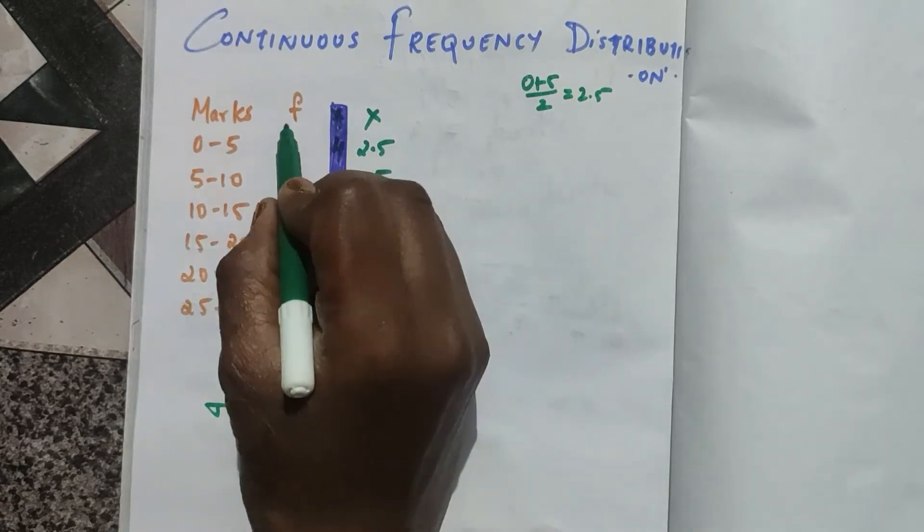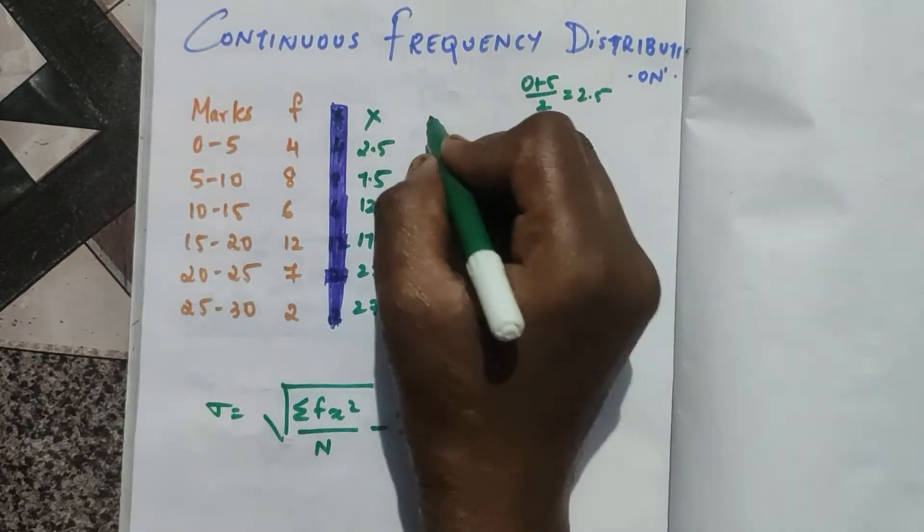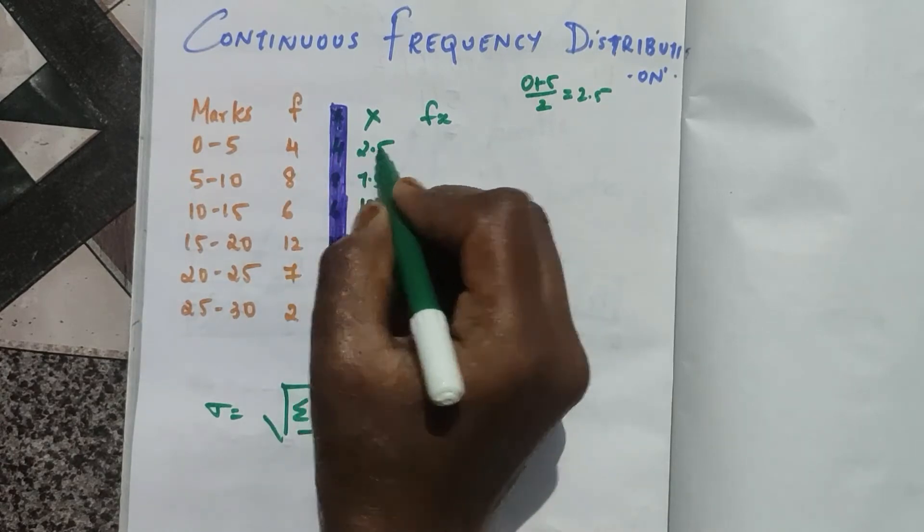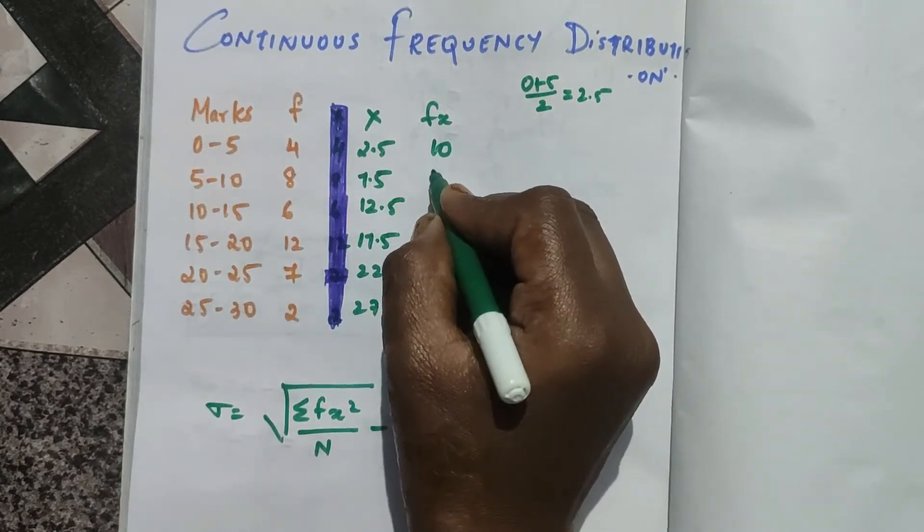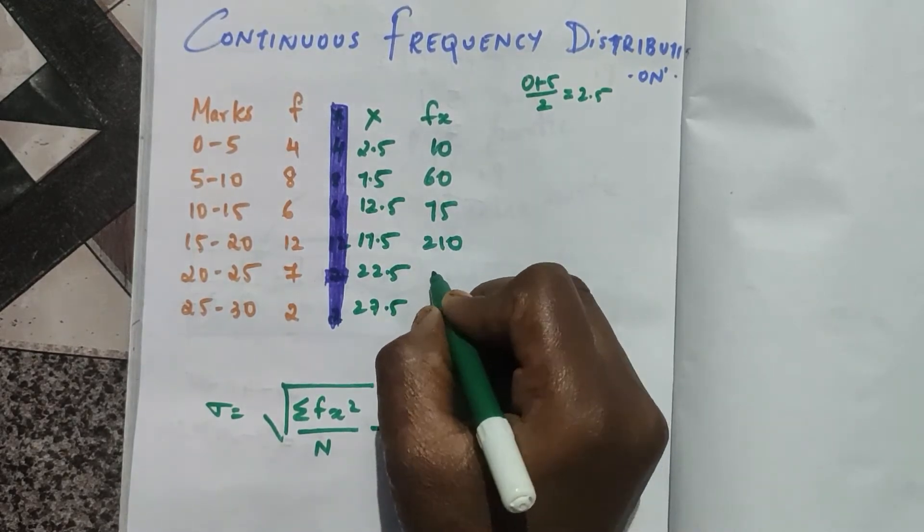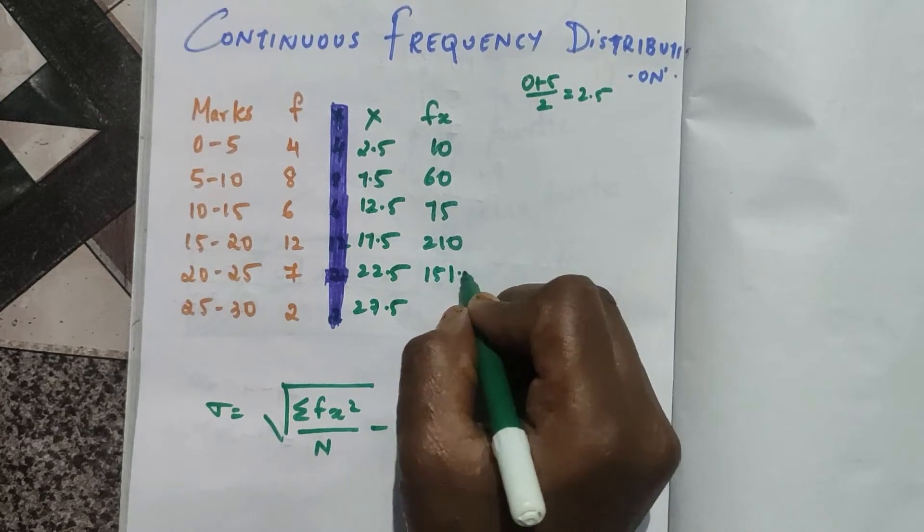Now we need to find out the fx value. So fx: four into two point five, that is ten; sixty; seventy five; two ten; one hundred and fifty one point five; and then fifty five.